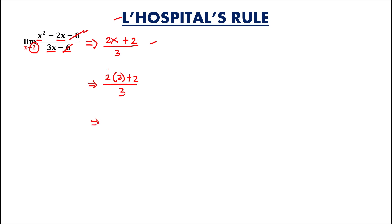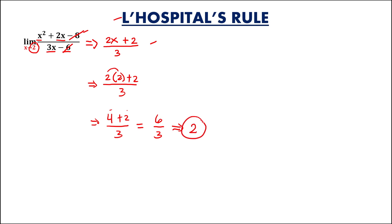This is equal to 2 times 2, which is 4, then plus 2 over 3. So 4 plus 2 is 6 over 3. Therefore, the limit is equal to 6 divided by 3, which is positive 2.